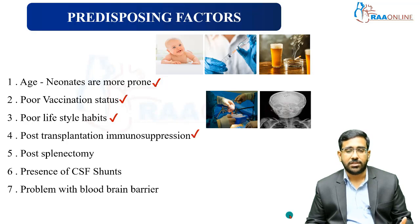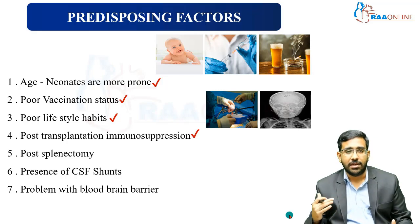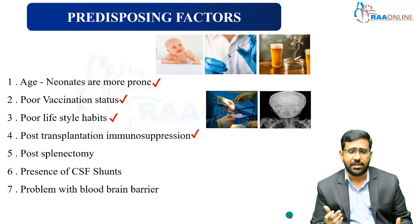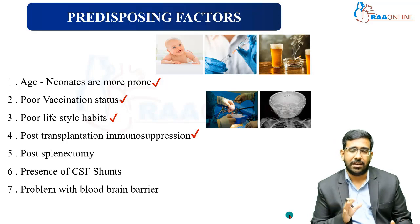The fourth predisposing factor is post-transplantation immunosuppression. There are two related terms: immunosuppression and immunocompromised. Immunosuppression is when we give medication or perform a procedure that reduces the patient's immune response, as seen post-transplantation. Immunocompromised refers to patients who themselves have underlying conditions like uncontrolled diabetes mellitus or primary or secondary immunodeficiency disorders. Examples of primary immunodeficiency include humoral immunodeficiency disorder or conditions like Bruton's tyrosine kinase deficiency.